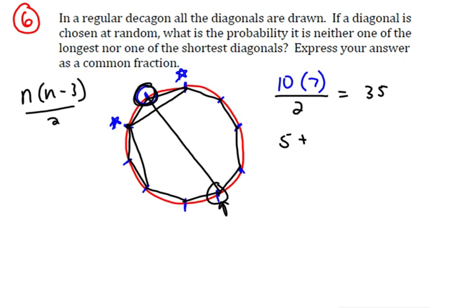And so that means we're going to do 10 vertices times 2, but for the same reason we have in this whole problem, we've got to divide by 2. So that means there are 15 that fit in this shortest or longest.